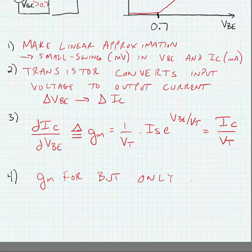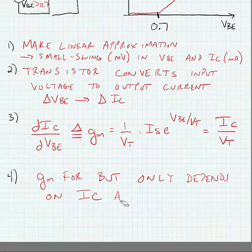So gm for a BJT only depends on two things: the collector current amplitude, or moreover, the collector current DC level, and VT has a temperature dependence.